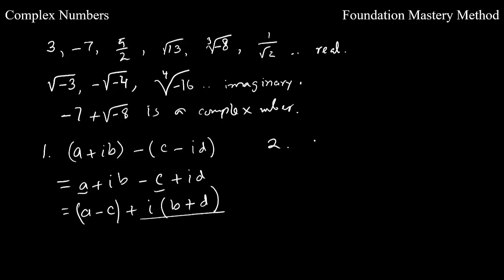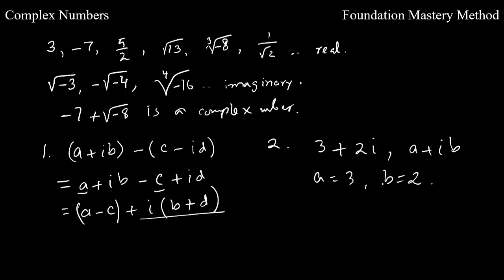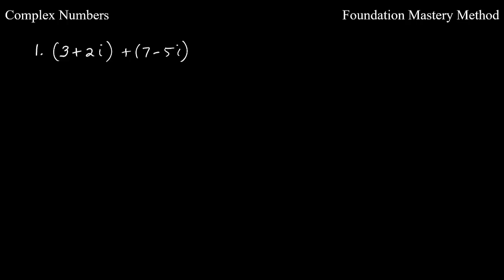If we have an example like 3 + 2i written in a + ib form, then a equals 3 and b equals 2. This is how you identify the real coefficient and the imaginary coefficient of a complex number.